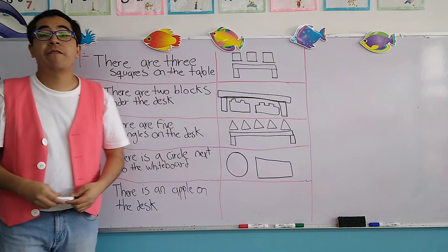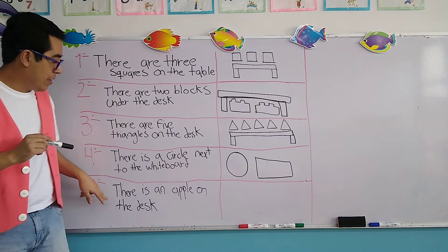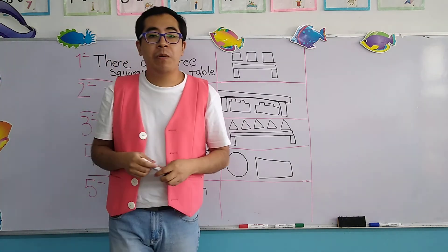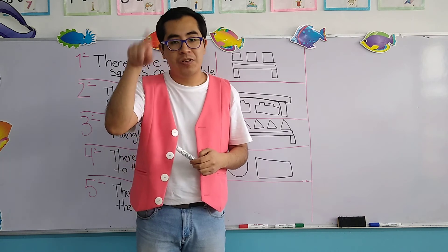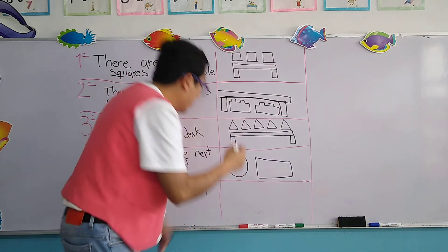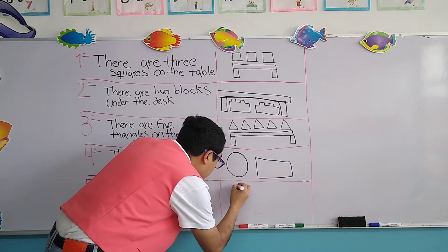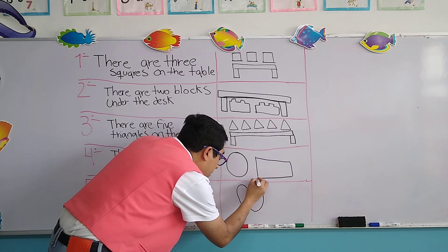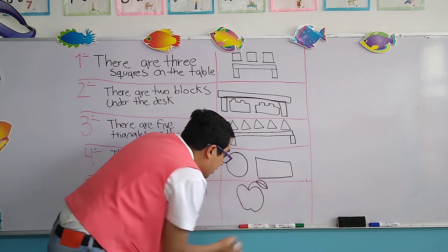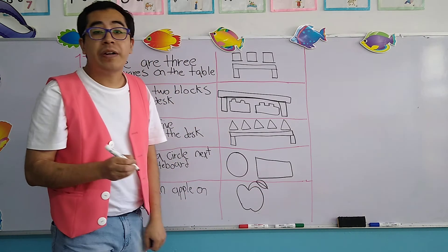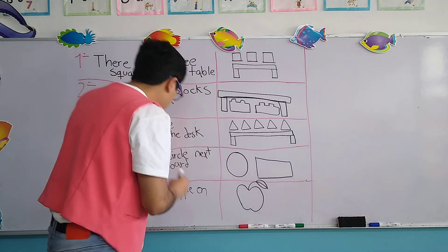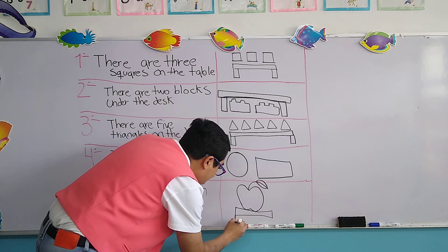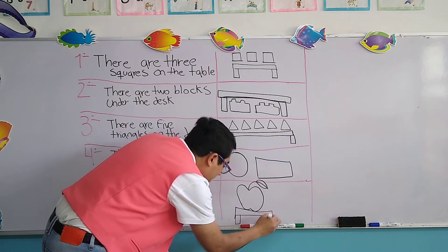And finally, number five says, there is an apple on the desk. Remember, apple is a fruit color red, and it looks like a circle. An apple. There is an apple. Don't forget to draw the leaf of the flower so we can recognize it's an apple. There is an apple on the desk. Arriba, the desk.